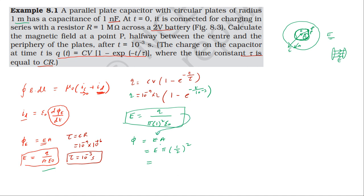Substituting the electric field formula, we get phi equal to Q divided by pi epsilon naught into pi into 1 squared, which simplifies to Q by 4 epsilon naught. So the electric flux phi equals Q by 4 epsilon naught.